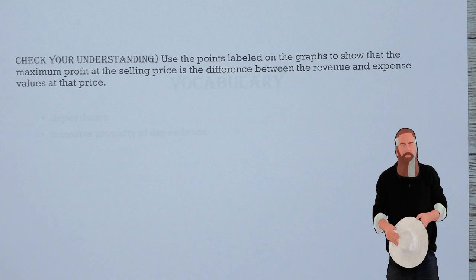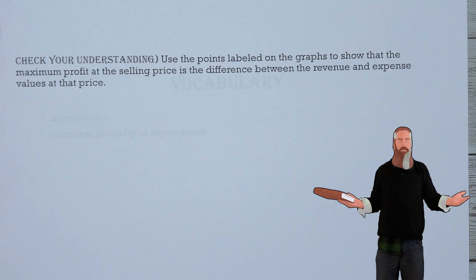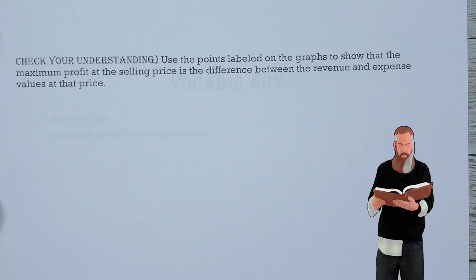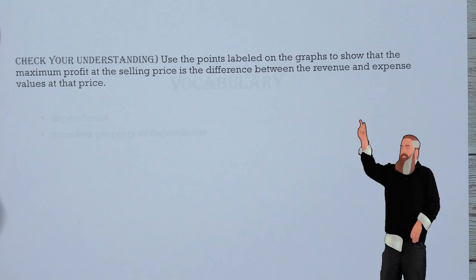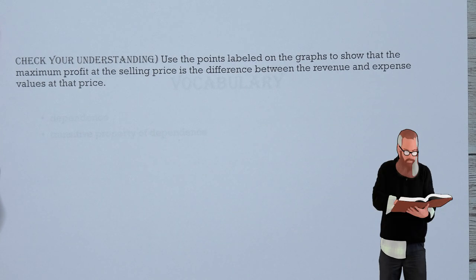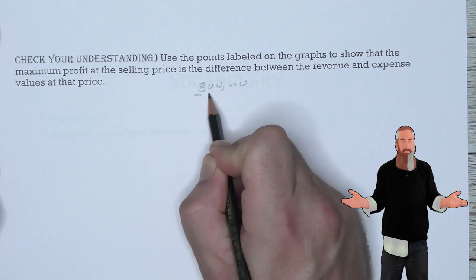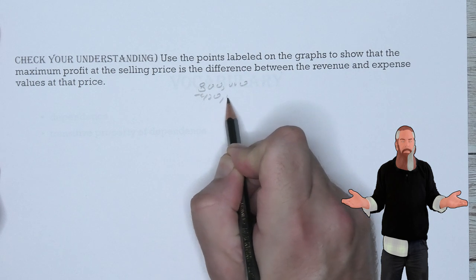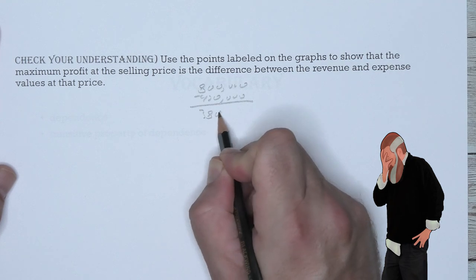The maximum point of profit of that function is 40, 380,000. The expense at the price of 40 dollars is 420,000. And, the revenue at a price of 40 dollars is 800,000. So, 800,000 minus 420,000, that's going to be equal to 380,000.